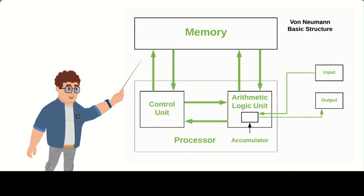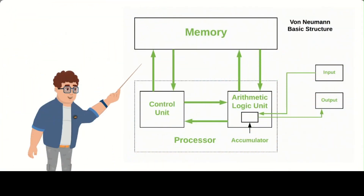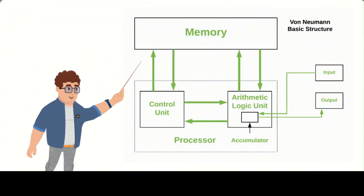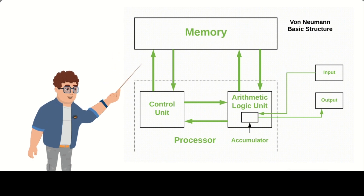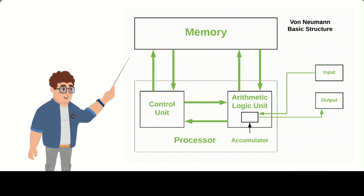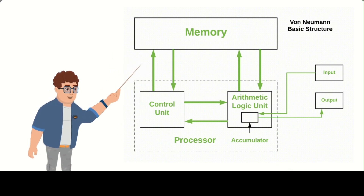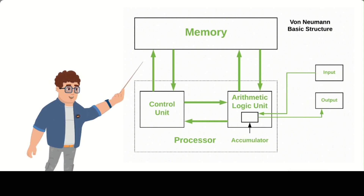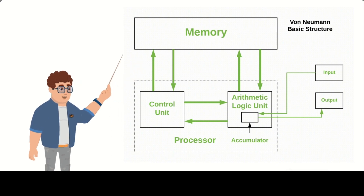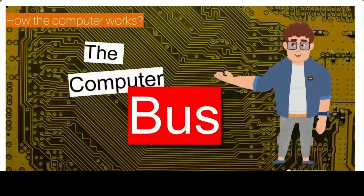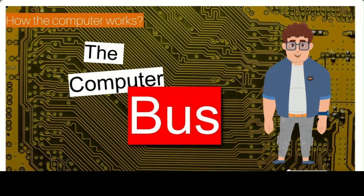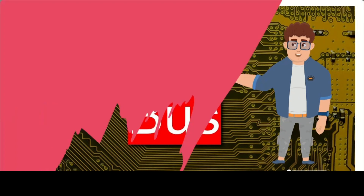Attributed to the renowned mathematician and physicist John Von Neumann, it is the fundamental concept in modern computer design and is used in most computers today. The architecture consists of three main components: the central processing unit, the memory, and input-output devices. Now let's look at the three types of buses one by one.